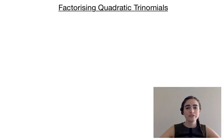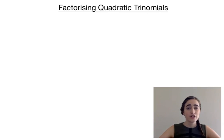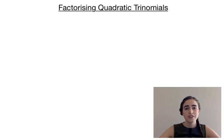In this video, I want to have a look at factorising quadratic trinomials. So what's a quadratic trinomial? A quadratic is an algebraic expression where the highest power is 2, so it's got a squared term in there. And a trinomial is an expression that has 3 terms. So a quadratic trinomial has 3 terms and has the highest power being 2.